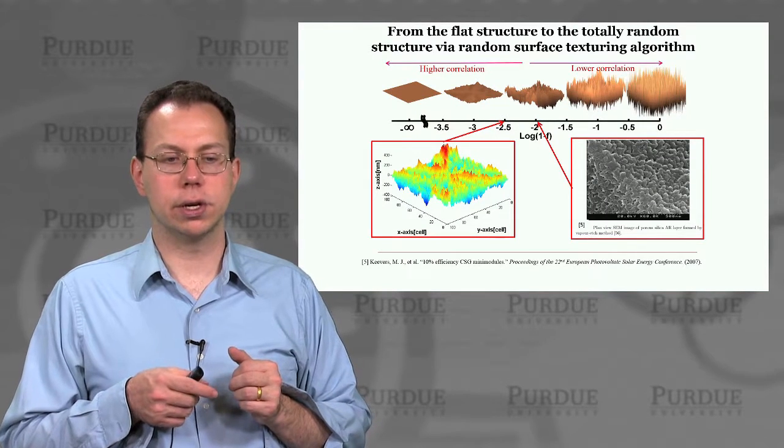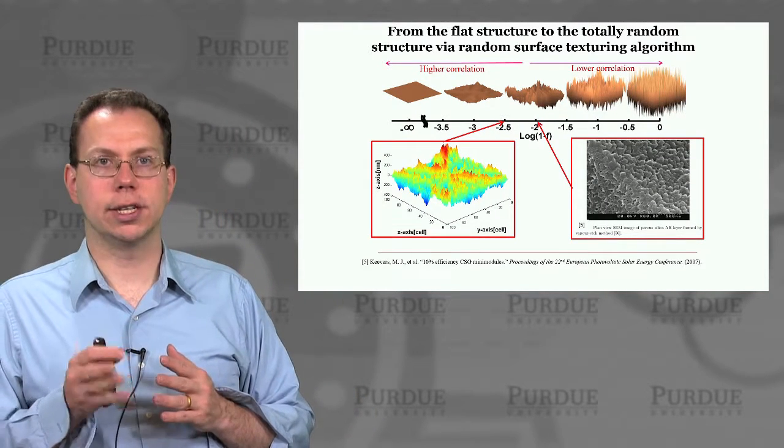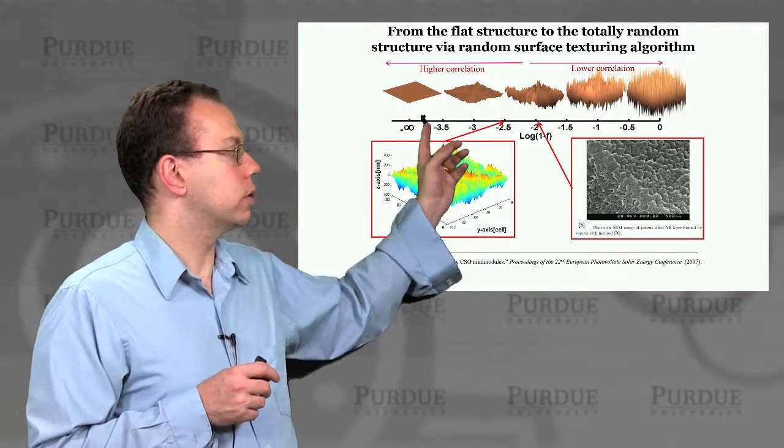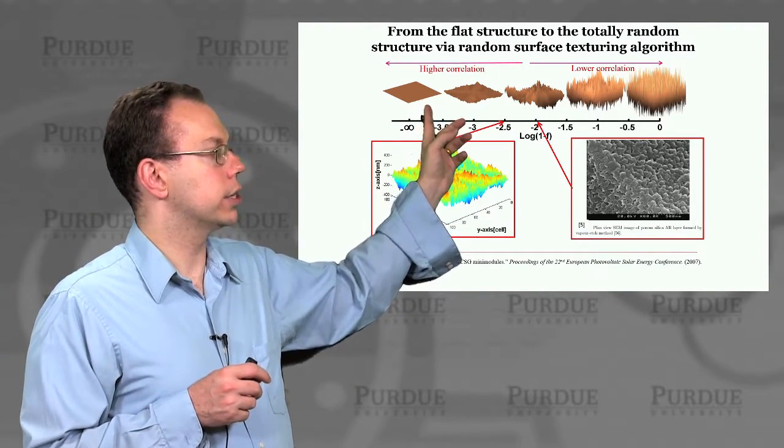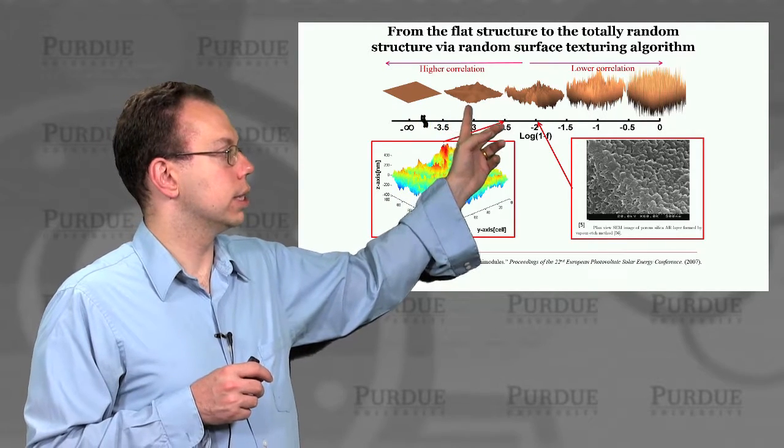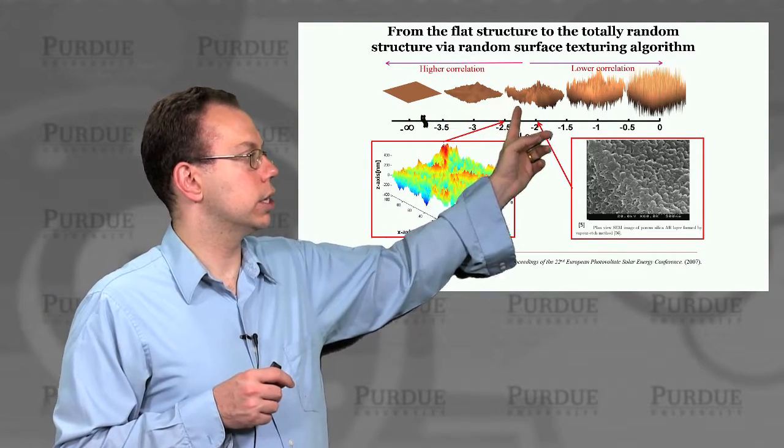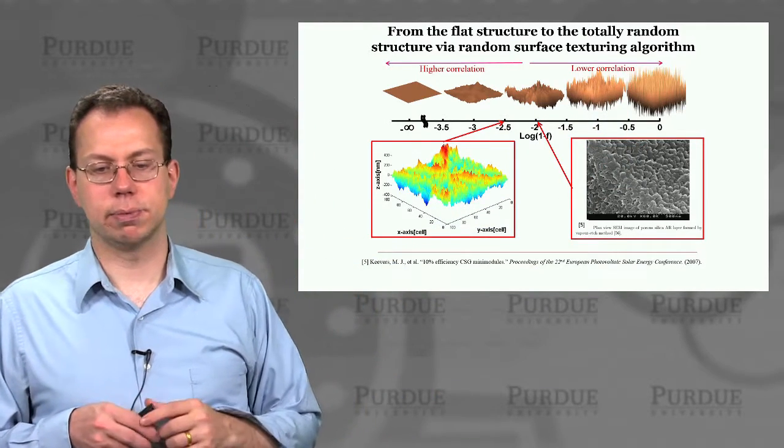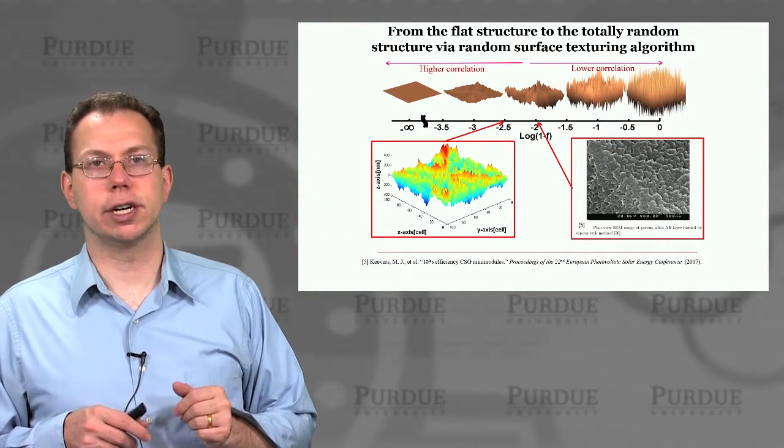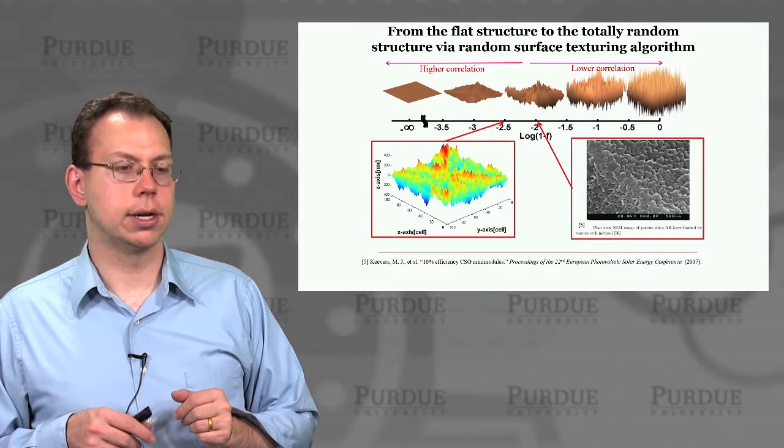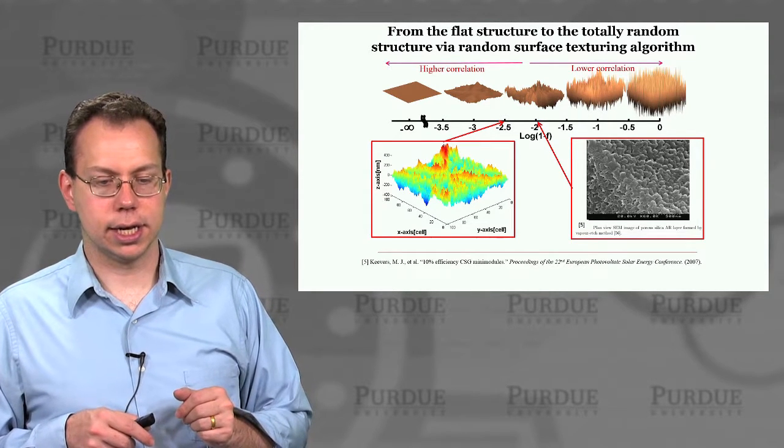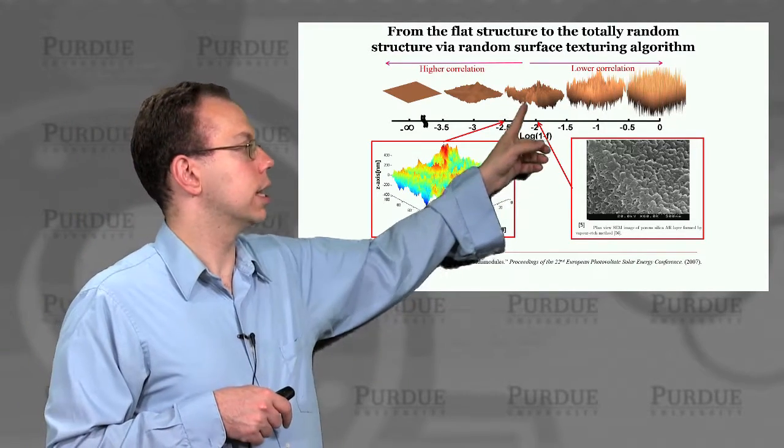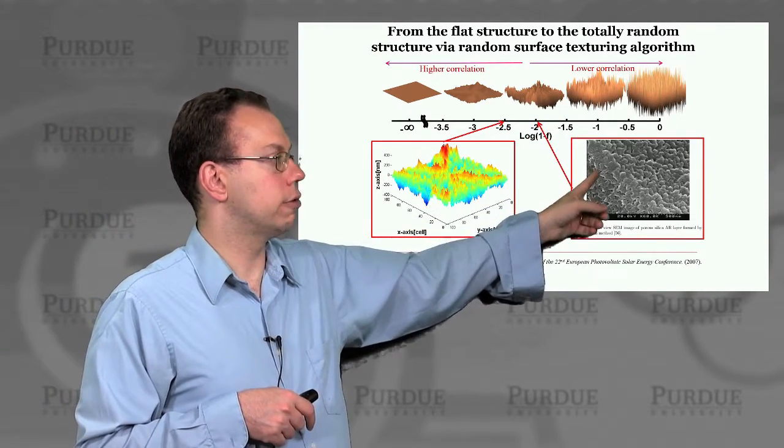You can actually go over a whole range as you change this autocorrelation term f from very high correlation, where essentially the structure is very flat, to something that's just a little bit textured, to something that's very, very, very sharply textured. Of course, that's actually very hard to realize in the experiment. But we do think if you look at the SEM images that it kind of appears that we're in the middle of this range oftentimes.